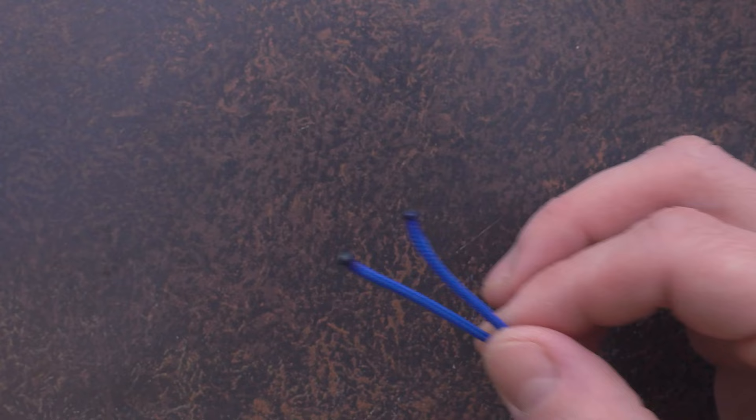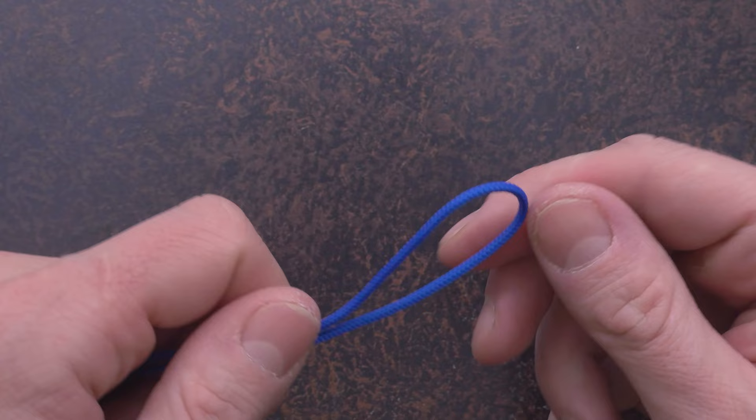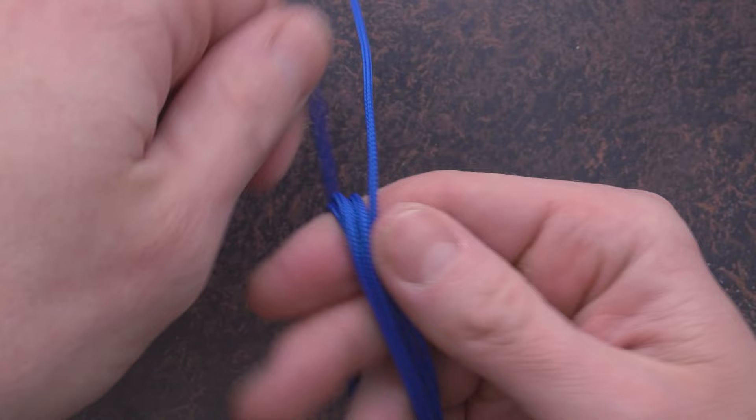We now prepare our cord, mandrel and lacing needle for the tying process. Fold your cord in half. We're going to use half of it to tie our knot. The other half, for now, we're going to coil up.